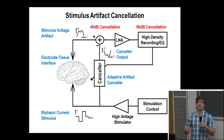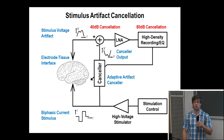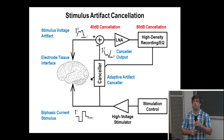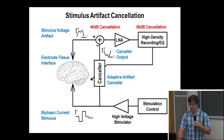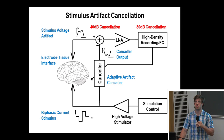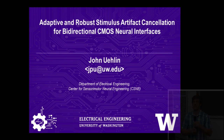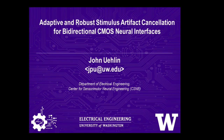My innovation is a canceler that uses information from both the stimulator and the recording channel on the same CMOS die to subtract a replica of the voltage artifact from the input of the recording channel — all done in real time with a digital feedback loop. It's an adaptive finite impulse response filter using a least mean squared error update algorithm. We've demonstrated up to 40 dB of cancellation at the front end, scaling a 1–10 volt artifact down to about a millivolt. We're currently developing this chip in 65 nanometer CMOS, with tape-out in about four days.